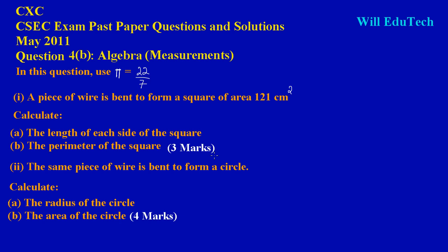This is a CSEC exam past paper question — May 2011, Question 4b. It comes under the topic of algebra, and more specifically, it's a measurements question. In this question, we're asked to use pi as 22 over 7. A piece of wire is bent to form a square of area 121 centimeters squared. We need to calculate: part 1a, the length of each side; part 1b, the perimeter; and in part 2, the radius and area of a circle formed by the same wire.